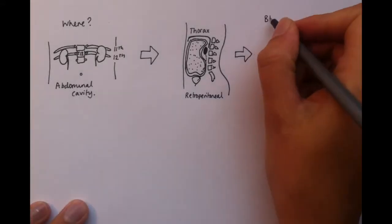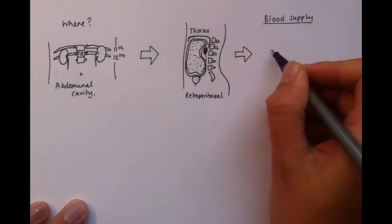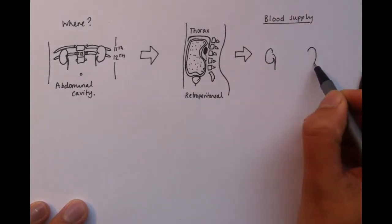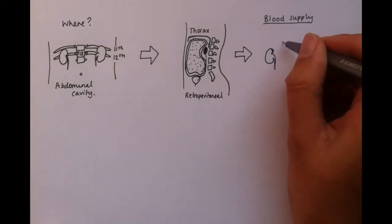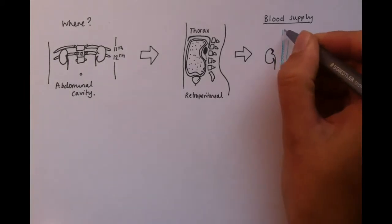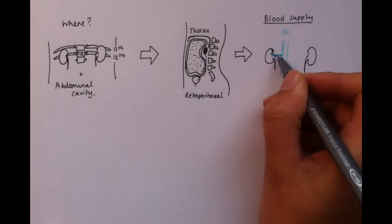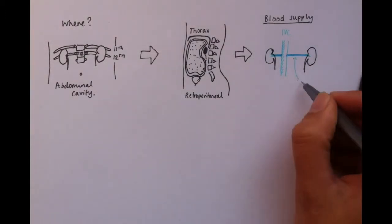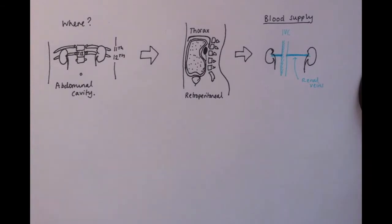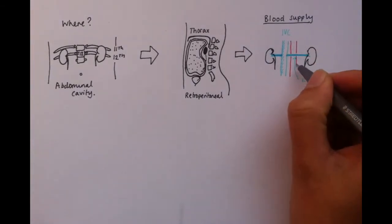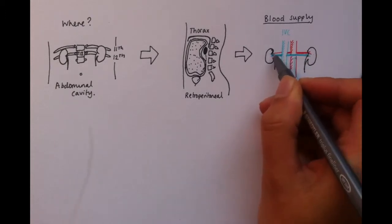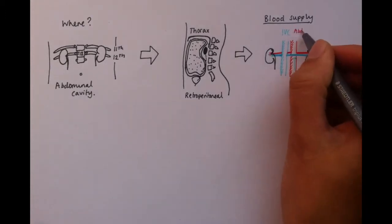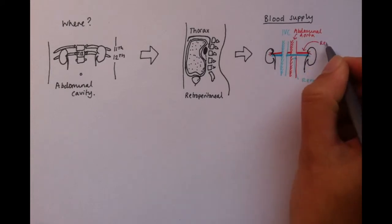We're now going to look at the blood supply of the kidneys. The kidneys receive 20% of the cardiac output, which is a huge amount, considering their size. Starting with the veins, we can see that the renal veins drain directly into the inferior vena cava, as it ascends up the abdomen. The kidneys are supplied by renal arteries, which are lateral branches of the abdominal aorta. As they enter the kidneys, they split to form interlobar arteries.